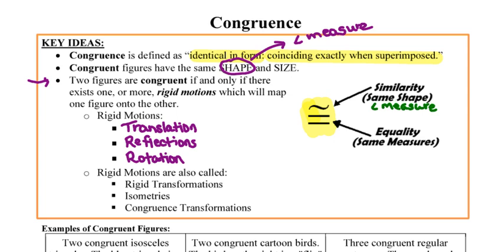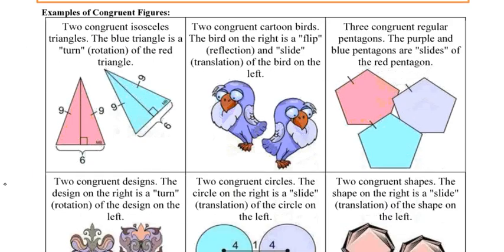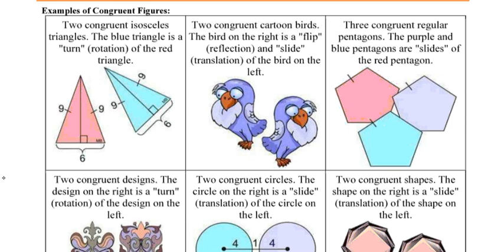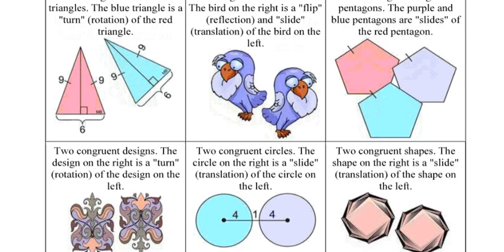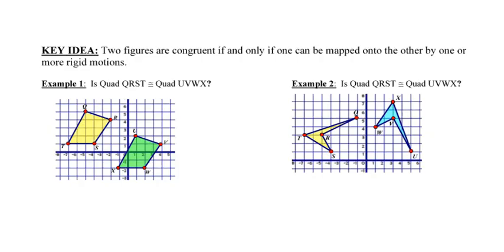All right, down at the bottom of the page, they've given you some examples of the different ways in which you might use some of these rigid motions to prove or to show congruencies. You can all read. I am not going to waste your time by reading through every single one of those. But rather, what I would like to do is turn up to the top of the next page and talk about that key idea. We say that two figures are congruent if and only if we can map one onto the other by one or more rigid motions.